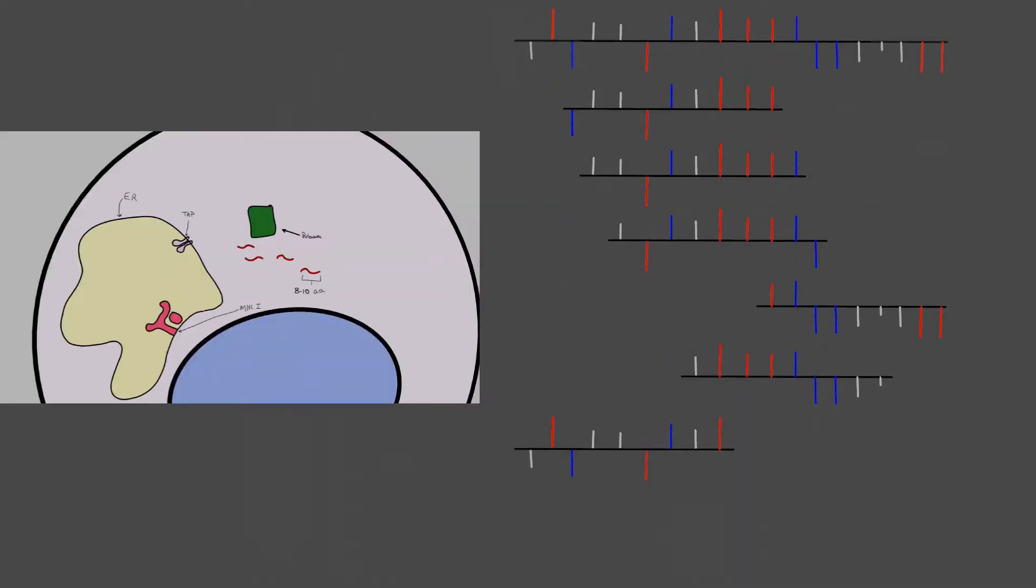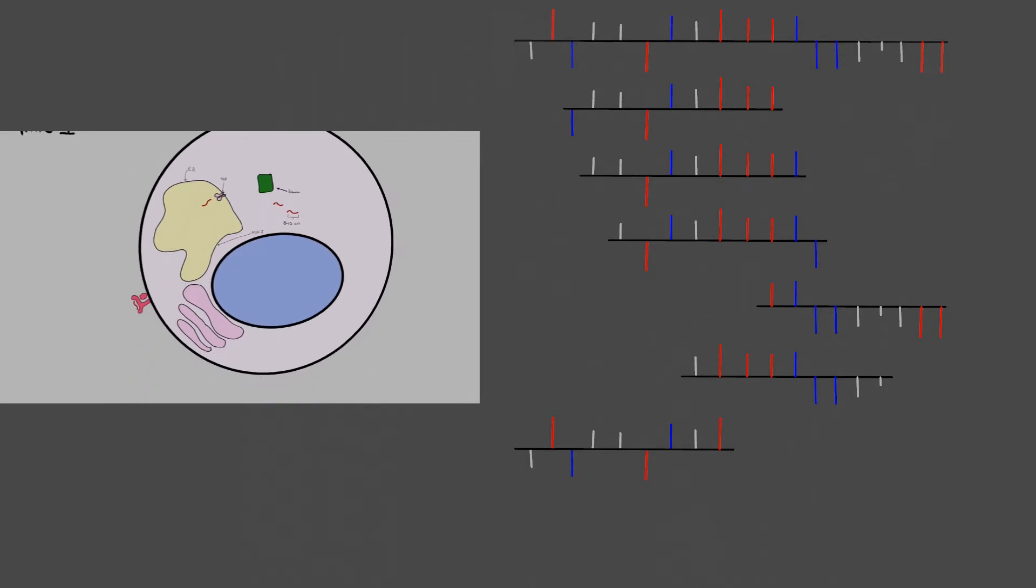Remember, these fragments are then all transported with TAP into the rough endoplasmic reticulum where they will be loaded onto MHC class 1. With that in mind, let's discuss MHC class 1 for a moment.